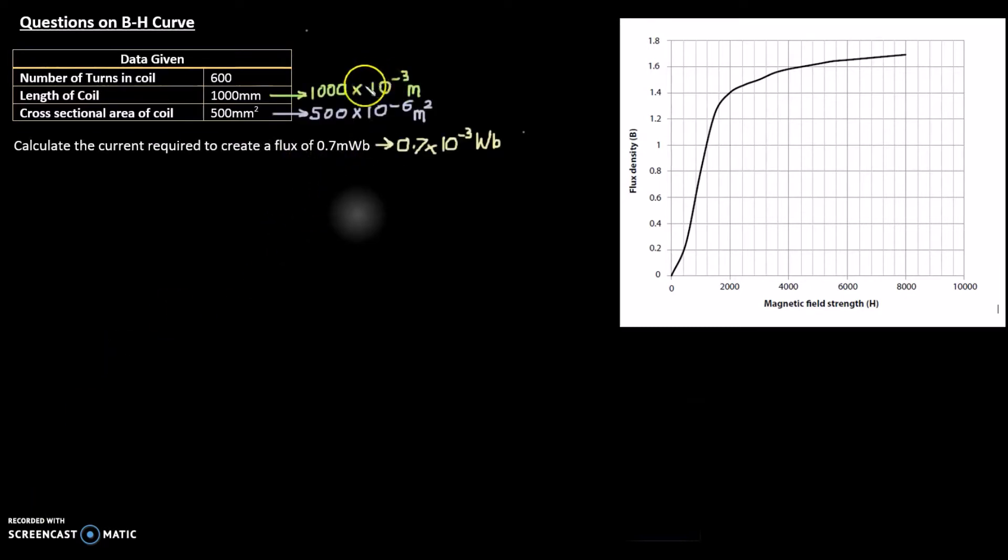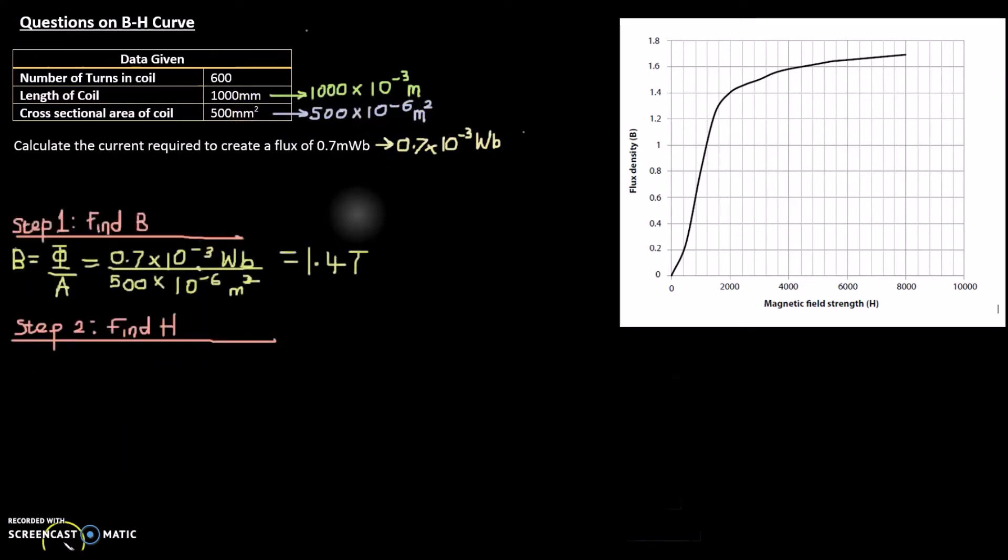The first step will be to convert all your units to SI units, so from millimeters to meters, from millimeter square to meter square, from milliweber to weber. Millimeter to meter is times by 10 to power minus 3, millimeter square to meter square is times by 10 to power minus 6, and milliweber is 10 to power minus 3. It's always milli 10 to minus 3, mm² 10 to minus 6, so please remember that.